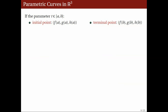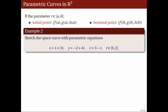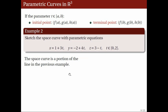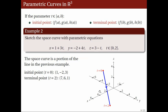Now, if the parameter t is restricted to the closed interval a to b, then the point obtained at t equals a is called the initial point of the parametric curve, while the point obtained at t equals b is called its terminal point. For instance, let's take the parametric equations in the previous example and restrict t to the closed interval 0 to 2. Then we obtain a portion of the line — specifically, the line segment directed from the point 1, negative 2, 3 to the point 7, 6, 1.